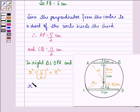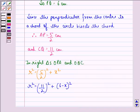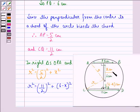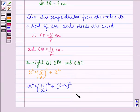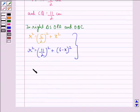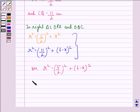We also have R² = (11/2)² + (6 − X)² and R² = (5/2)² + X². Note that if we had taken OQ = X, then OP becomes 6 − X, giving the same pair of equations. So we work with R² = (5/2)² + (6 − X)² and R² = (11/2)² + X².